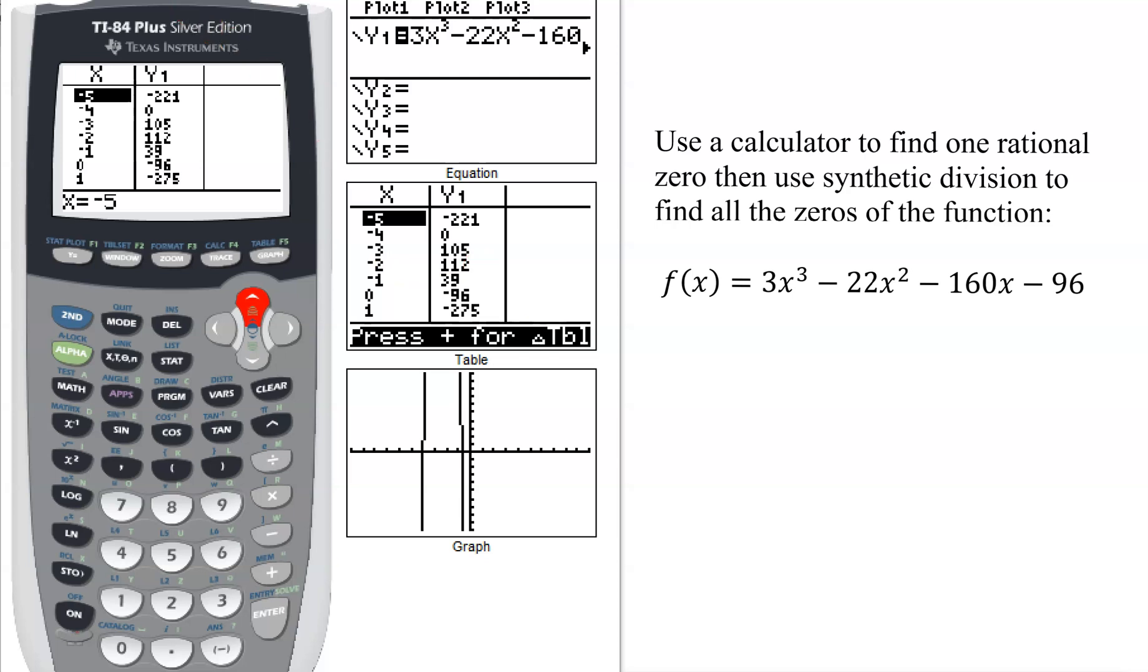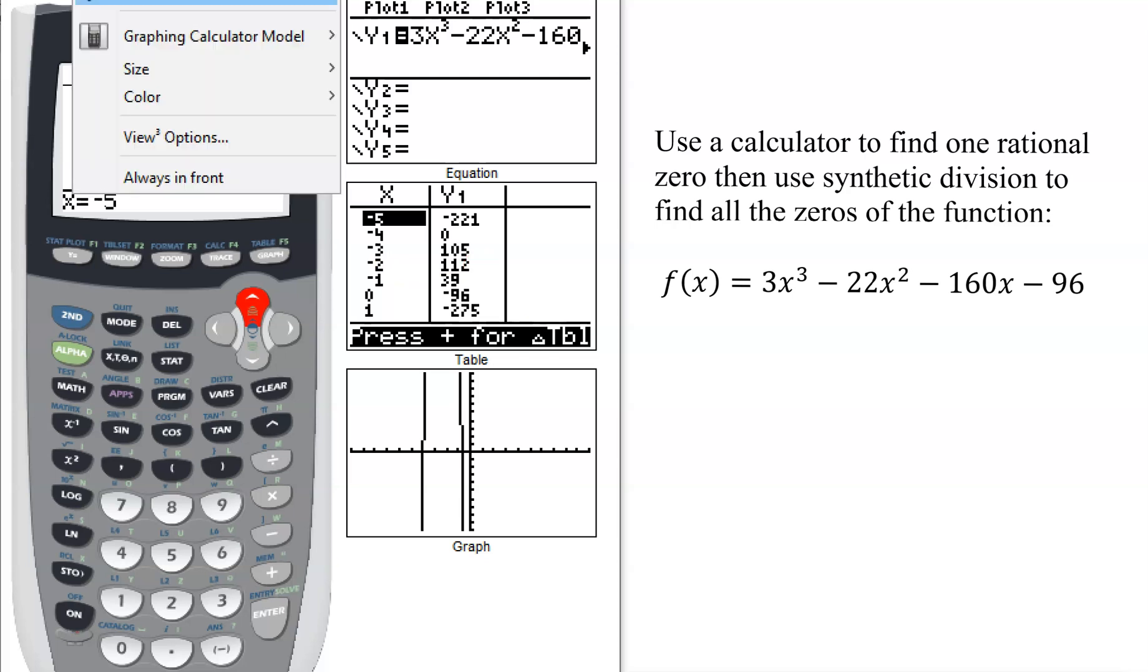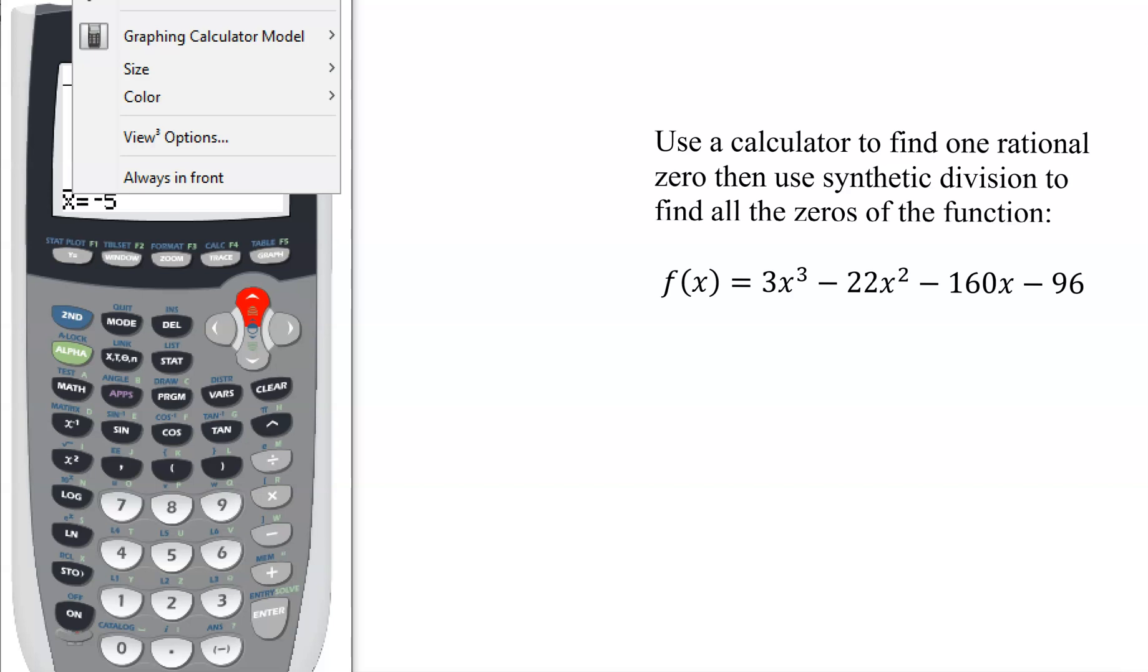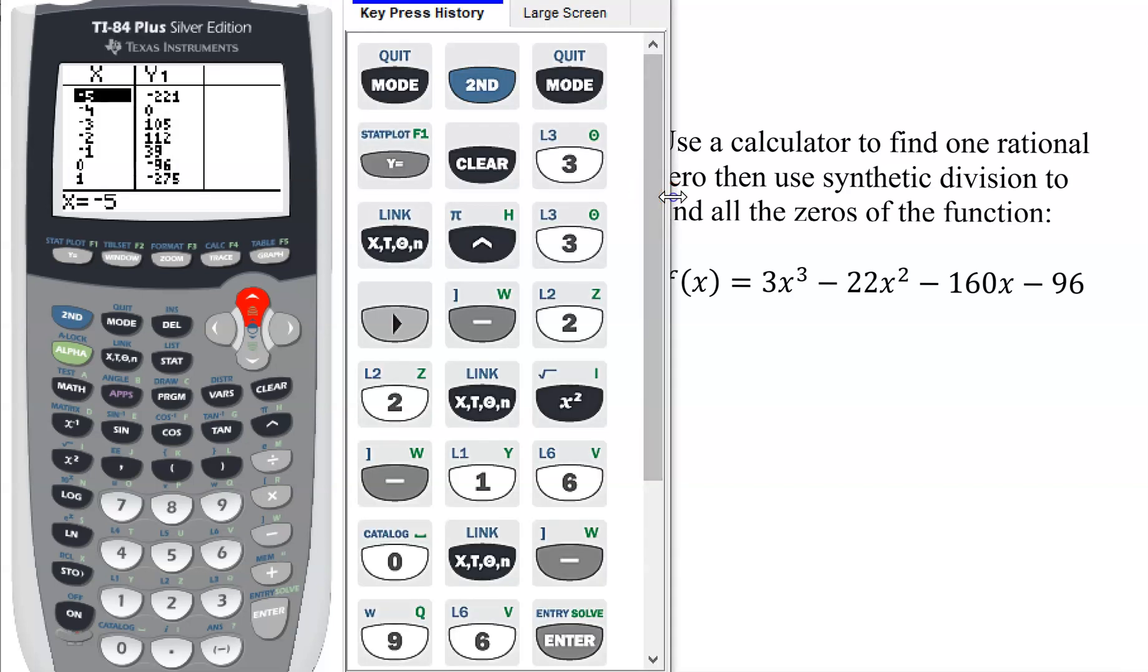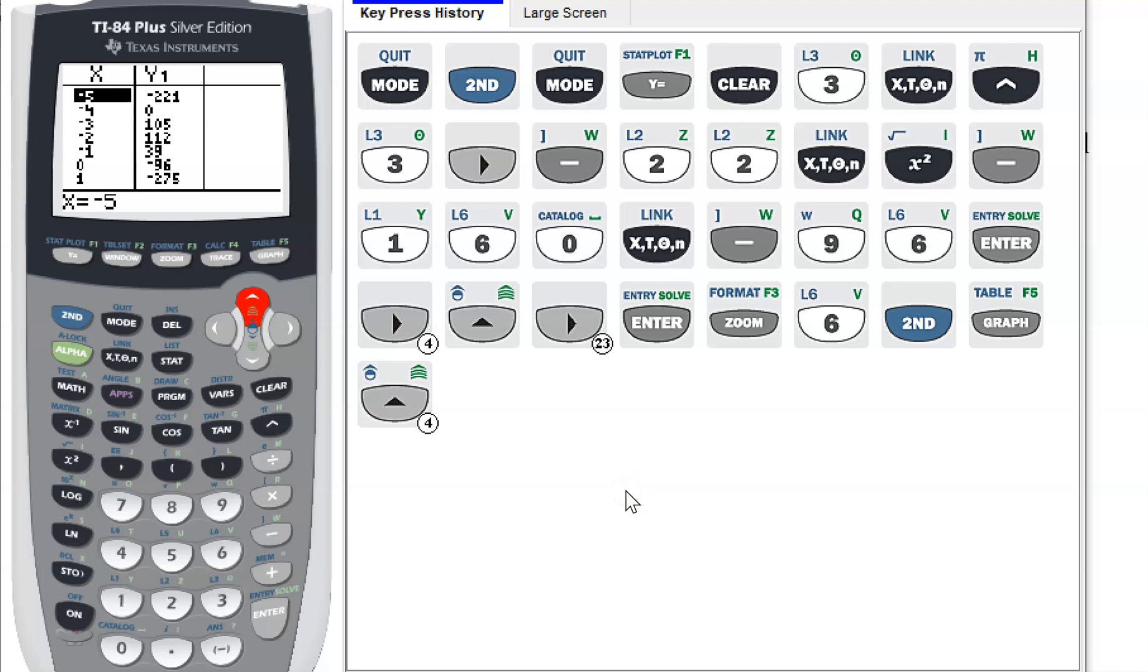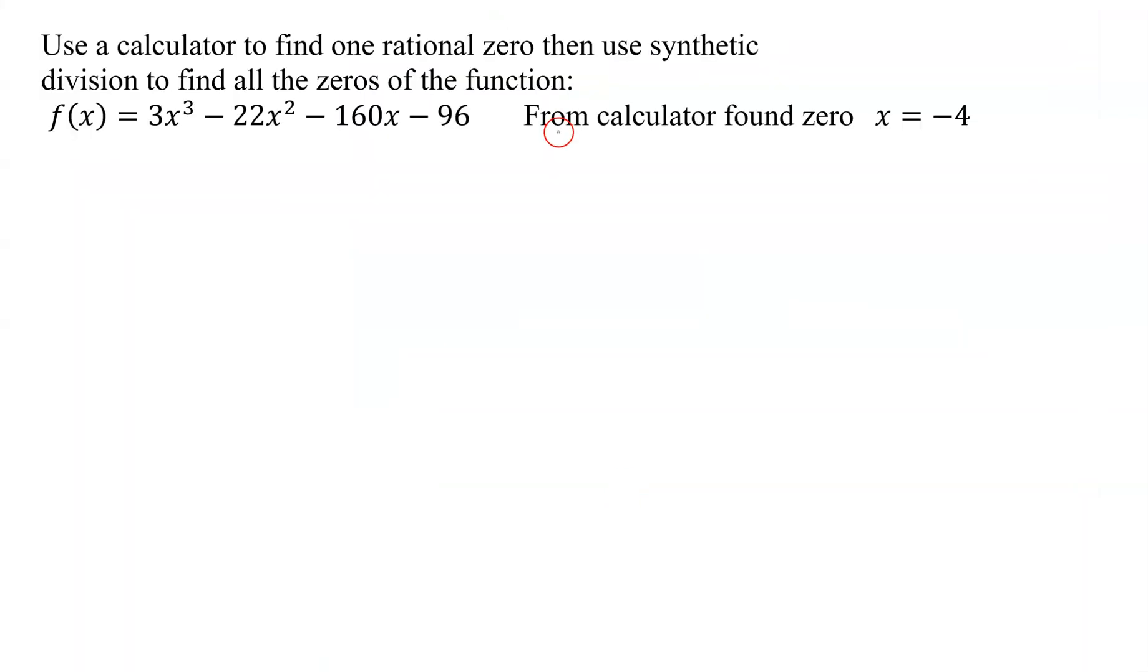So I found my first zero is x equals negative 4. One last thing I can show you is if I get rid of that screen, I can show you all the keystrokes that I went through. So if you need to see those, you can pause the video and look at those. So from the calculator, we found our first zero to be negative 4. And now we're going to use synthetic division to find all the other zeros of the function.